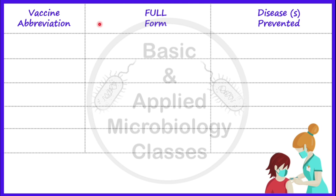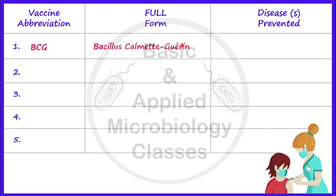Let's start with the first one, that is BCG. The full form of BCG is Bacillus Calmette-Guérin, and this BCG vaccine is recommended to prevent tuberculosis, which is commonly known as TB. TB is a bacterial disease caused by Mycobacterium tuberculosis, and the route of administration of BCG is the intradermal route.